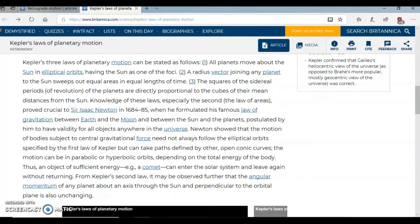Anywhere in the universe. Newton showed that the motions of bodies subject to central gravitational force need not always follow the elliptical orbits specified by the first law of Kepler but can take parts defined by other open conic curves. The motion can be in parabolic or hyperbolic orbit depending on the total energy of the body.